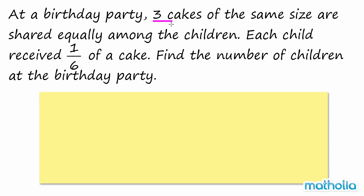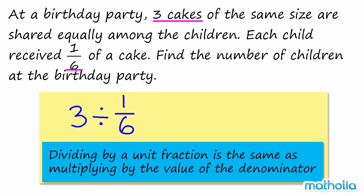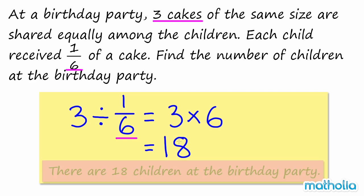We need to divide the number of cakes by the fraction of cake each child received. Recall that dividing by a unit fraction is the same as multiplying by the value of the denominator. Three divided by one-sixth is equal to three times six. So there are 18 children at the birthday party.